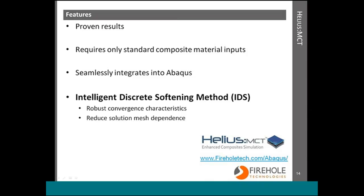The final feature I'm going to talk about is the intelligent discrete softening method. It's a material degradation algorithm that reduces many of the common problems associated with progressive failure analysis. It has robust convergence characteristics and reduces solution mesh dependence.